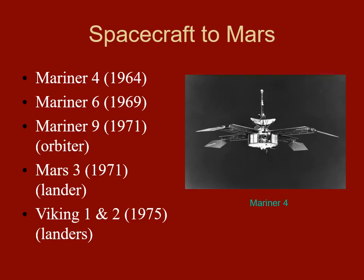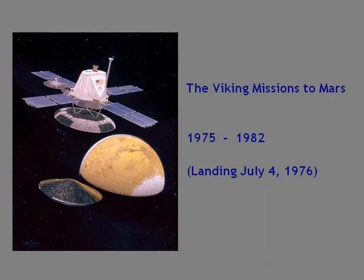In studying Mars, we want to send spacecraft there. One of the first was Mariner 4, which flew by distantly. Mariner 6 flew by much closer, and Mariner 9 went into orbit. The Soviets sent Mars 1 and Mars 2, which didn't work right. Mars 3 landed and then shut itself off. A few years later, the Americans landed Viking 1 and Viking 2, which worked perfectly. The Vikings also had orbiters, and they gave us our very first up-close views of the surface of the planet.